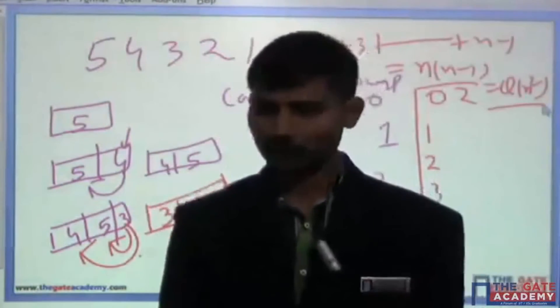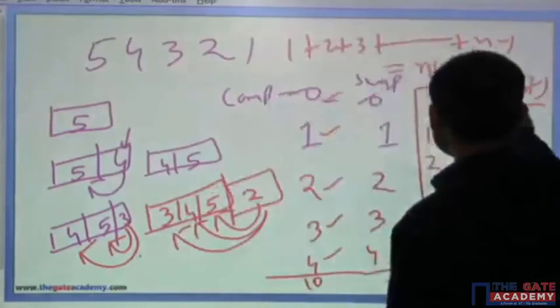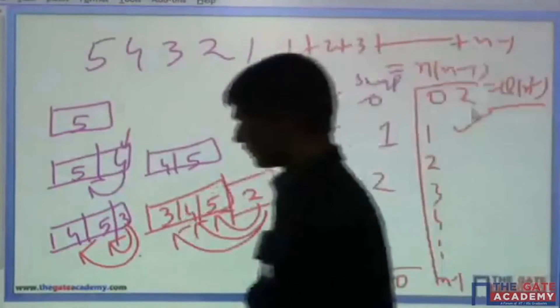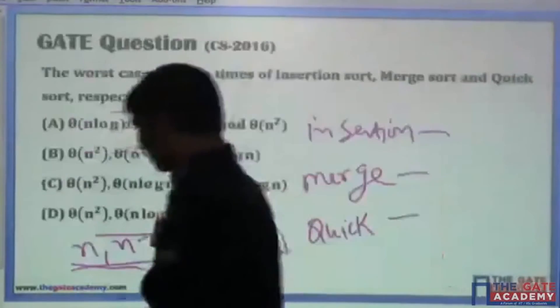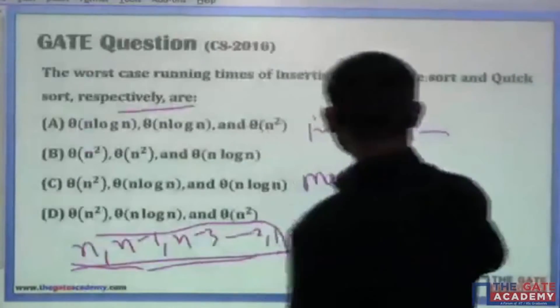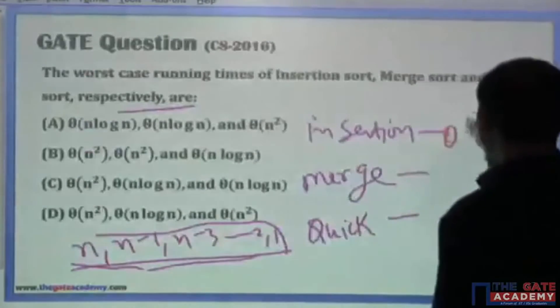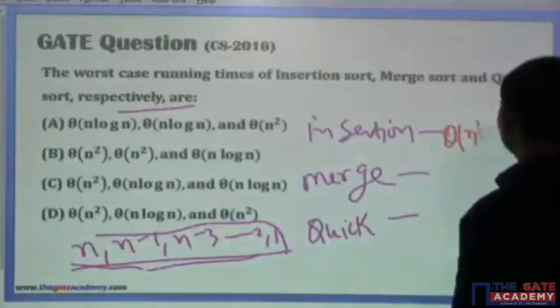So the time complexity of insertion sort in the worst case is θ(n²).